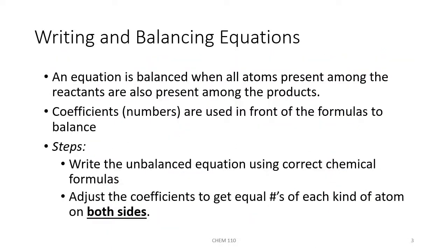Balancing equations will take a little practice, and there's no right or wrong way to go about doing it. The only thing we can change are those coefficients — the numbers out in front of the different species within the chemical equation. We can never change the subscripts within a chemical formula in order to balance it, because if you start changing the subscripts, you're actually changing what the substances are.